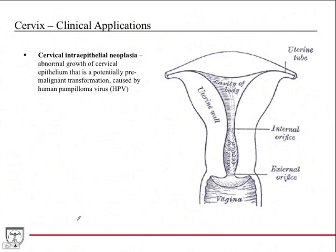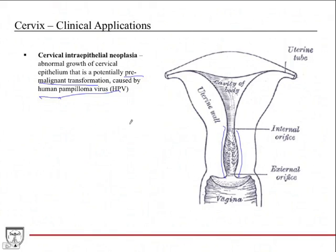Clinical applications of the cervix are very high-yield and often tested on board exams. Cervical intraepithelial neoplasia (CIN) is abnormal growth of the cervical epithelium — the epithelial luminal surface — and it's potentially pre-malignant, so the key is it's not yet malignant. It can progress through various pre-malignant stages all the way to a malignant tumor. It's caused by human papillomavirus (HPV), which is why HPV vaccines are important: the vaccine decreases the risk of HPV infection, which reduces the risk of CIN, which in turn reduces the risk of cervical cancer.